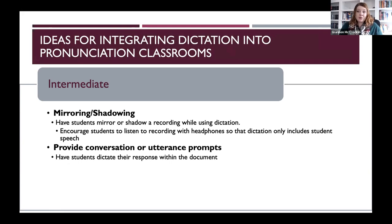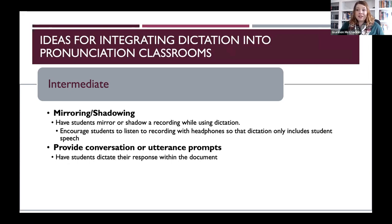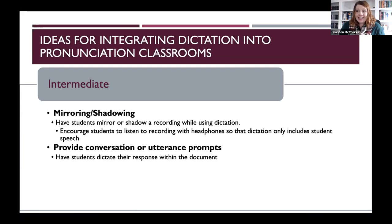For intermediate learners — those who want to do longer stretches of practice — one activity might be mirroring or shadowing. This is basically the same mirroring and shadowing activities you may already do in practice. When students do this, it's helpful to have them listen or watch using headphones so that when they talk and use dictation to track their pronunciation, it isn't catching the computer's audio. They basically dictate what they hear, either mirroring at the same time or shadowing, following a bit behind the speaker. You could also provide students with conversation or utterance prompts — fairly short or longer depending on skill level — where there's a fairly clear answer students need to give.